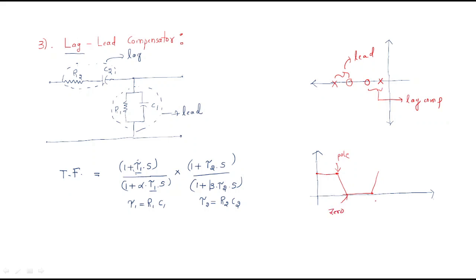In the magnitude plot, as the zero is added the slope increases, and when a pole is added again it returns to a straight line. The overall magnitude of the lag-lead compensator starts initially high, decreases with some slope, becomes constant, increases again, then becomes constant. For a particular range of frequencies the gain is reduced — that is why the lag-lead compensator is called a band reject filter or band stop filter.